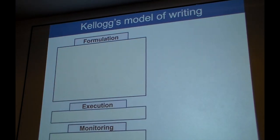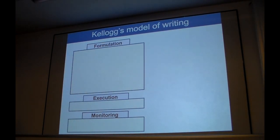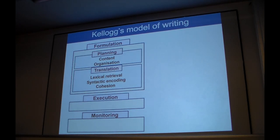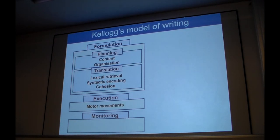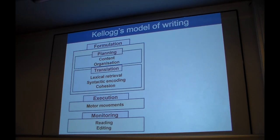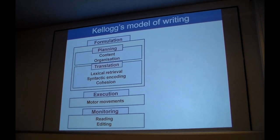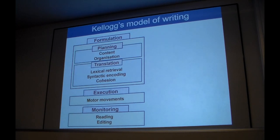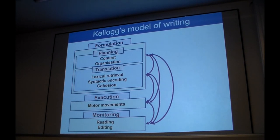The other theoretical framework that informed our study was Kellogg's model of writing. This model conceptualizes writing in terms of three processes: formulation, execution, and monitoring. When we formulate what we would like to write, we plan the text, the content and organization of the written piece. Then we translate that plan into linguistic form through linguistic encoding processes such as lexical retrieval, syntactic encoding, and expression of cohesion. Then at the execution stage, we use motor movements to produce either a typed or a handwritten text. When we write, we also monitor our performance, we read what we've written, we also edit the evolving text to make sure that it actually reflects the intended content. All these processes work in parallel; this is an interactive model.